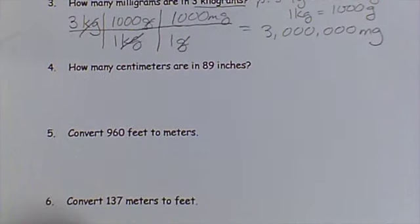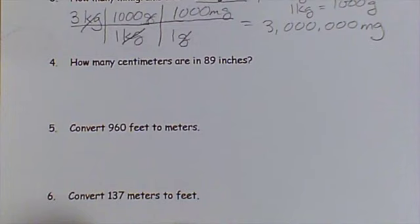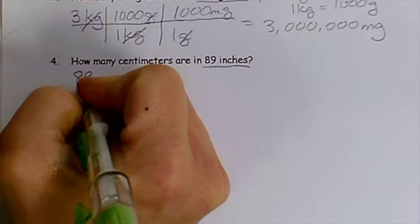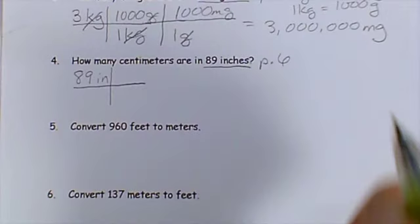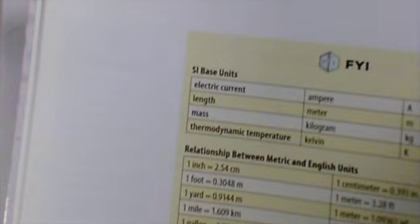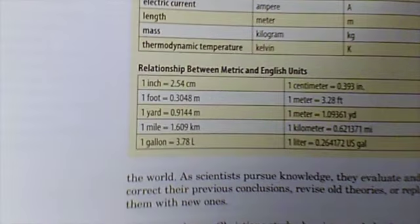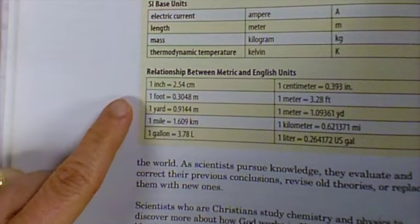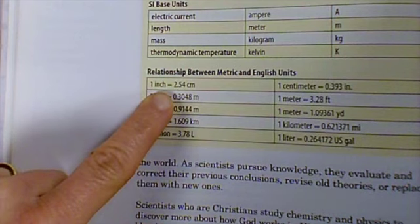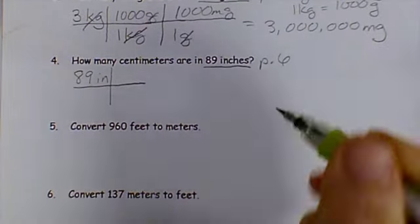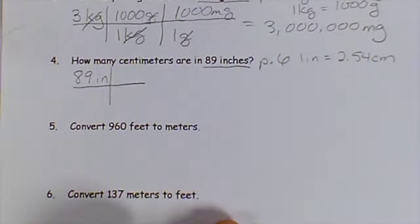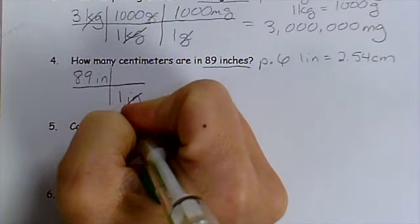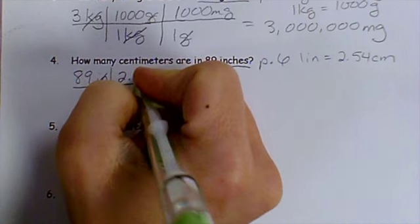Sometimes we want to convert between metric and the English system. So my question here is how many centimeters are in 89 inches. So I start with 89 inches. And I look up this time on page six. And I want to go from inches to centimeters. So right here it says one inch equals 2.54 centimeters. So I write that down: one inch equals 2.54 centimeters. So inches goes on the bottom, so I can cancel it out. Centimeters on the top: 2.54 centimeters.